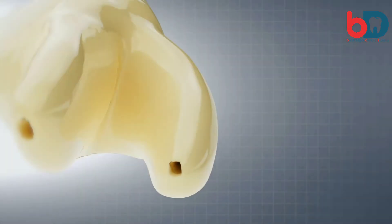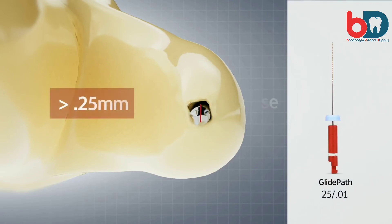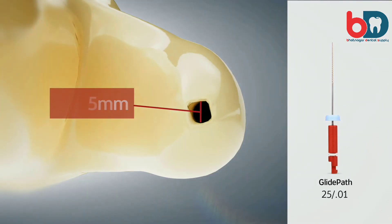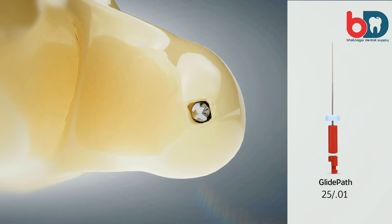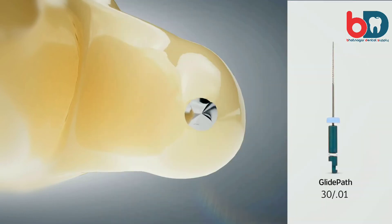Conversely, if the 2501 Logic glide path file is loose at working length, then the foramen diameter is larger than 0.25 millimeter and the clinician should proceed to the next sequentially larger glide path file — in this case, the 3001. Continue this process until patency is snug.